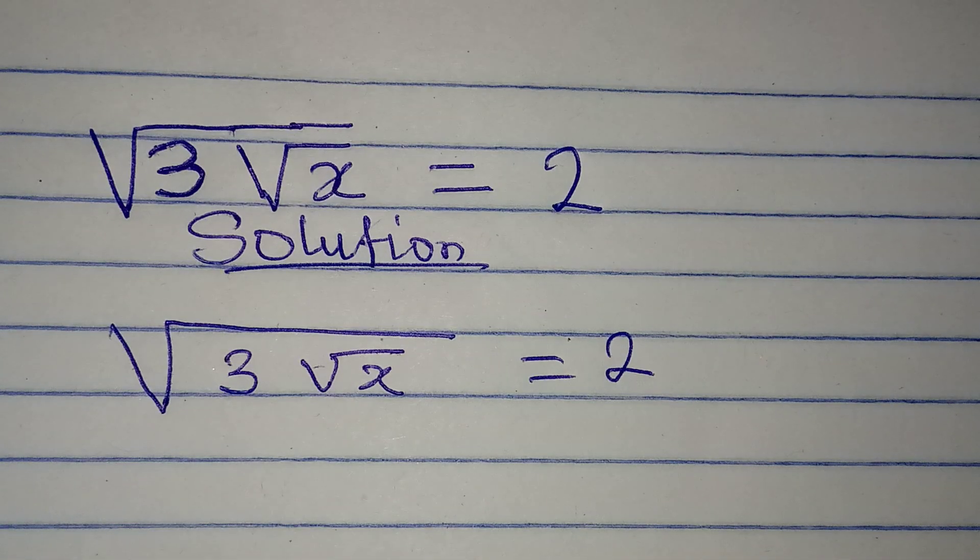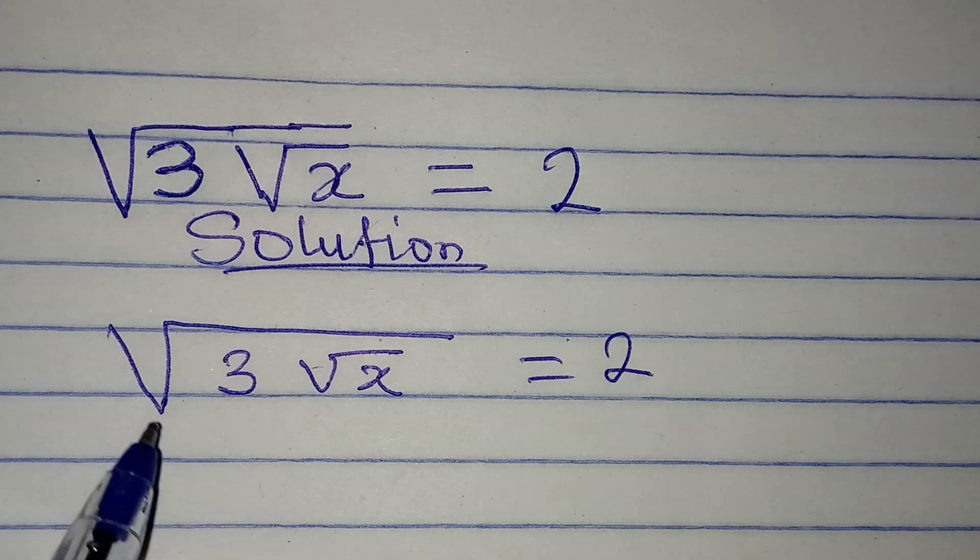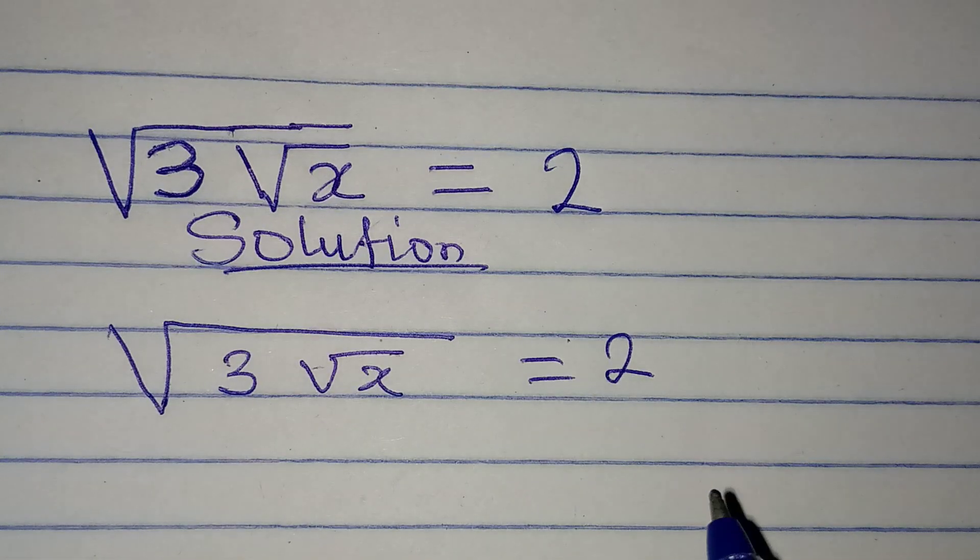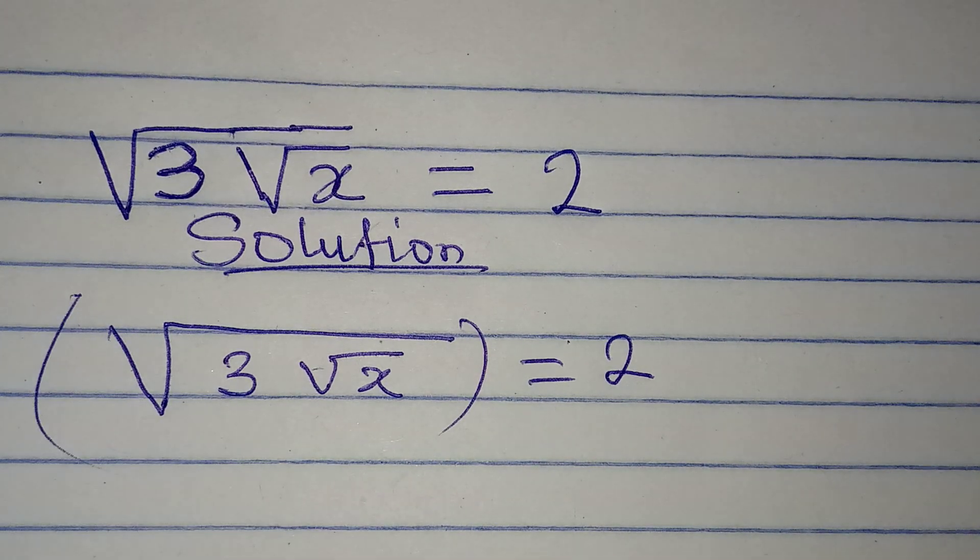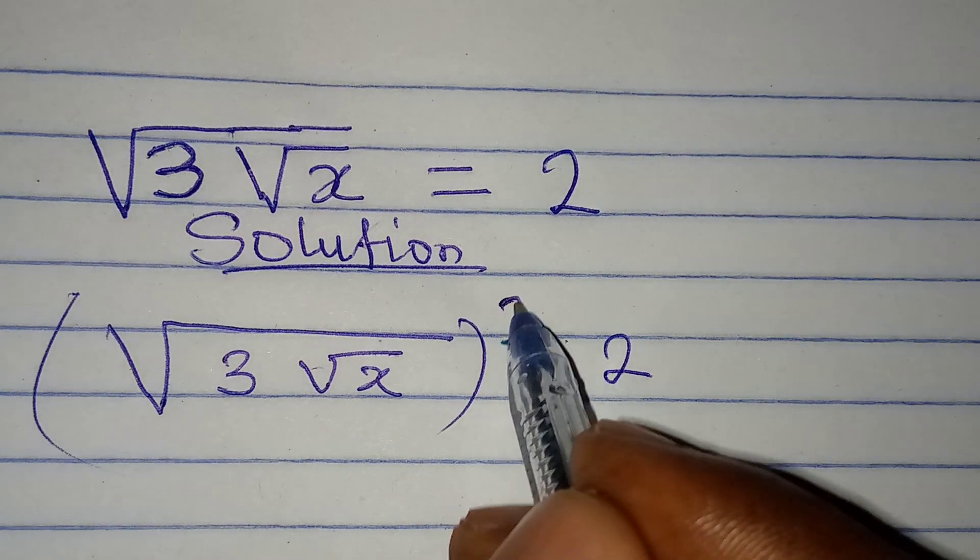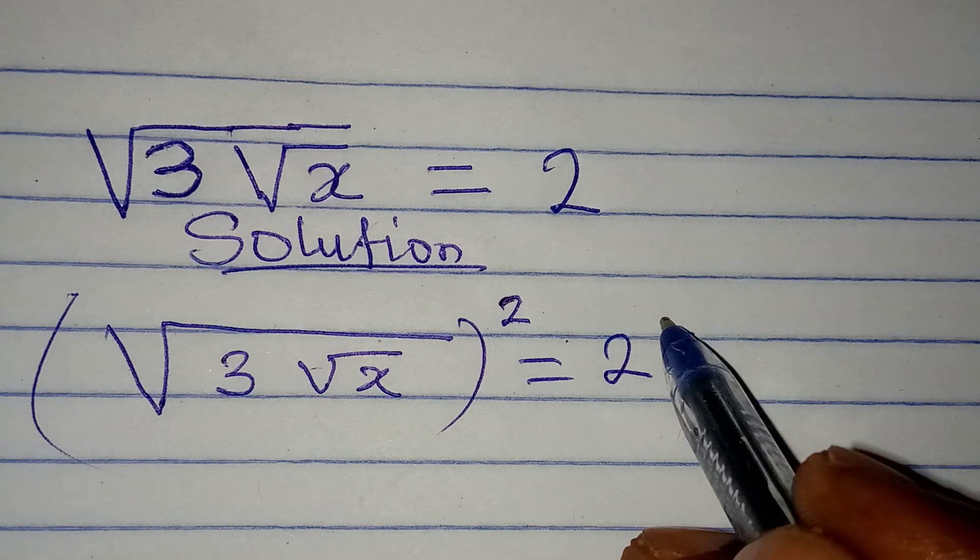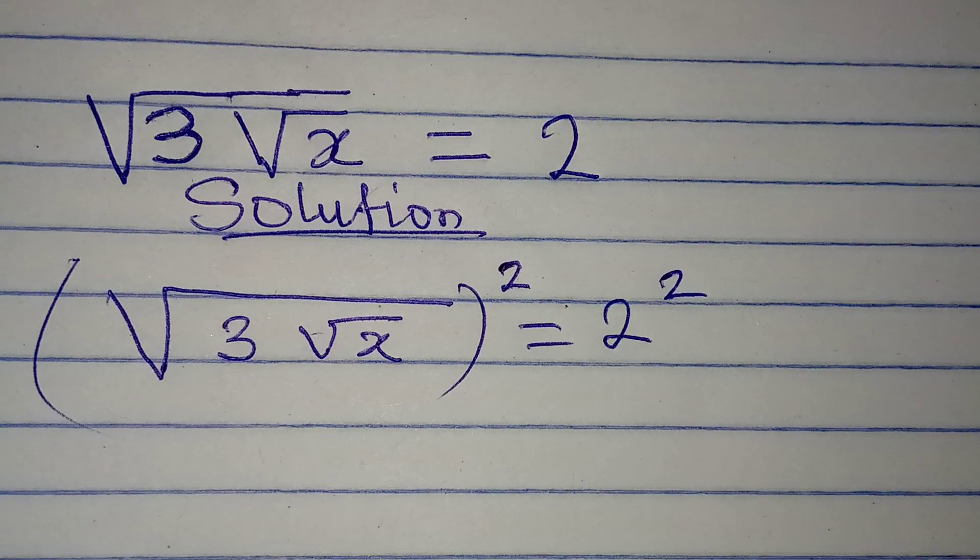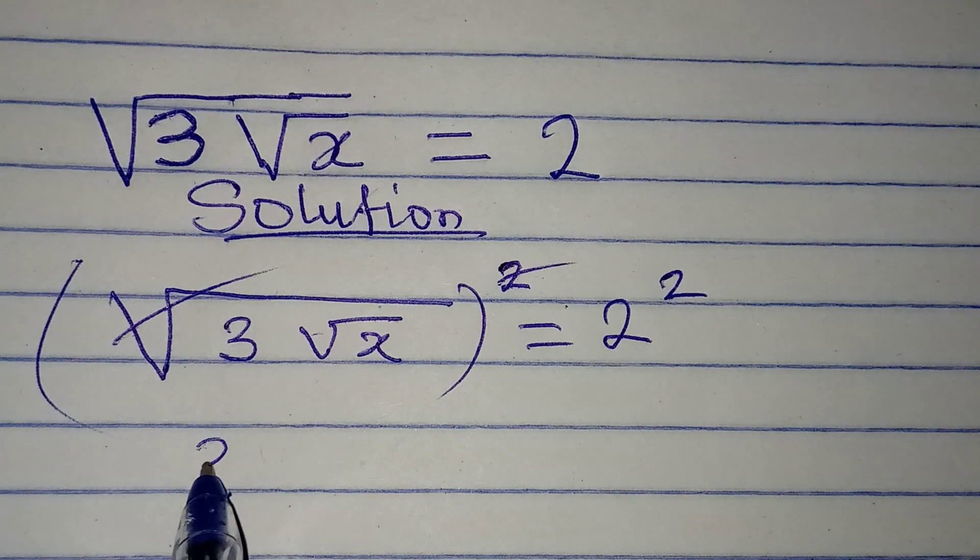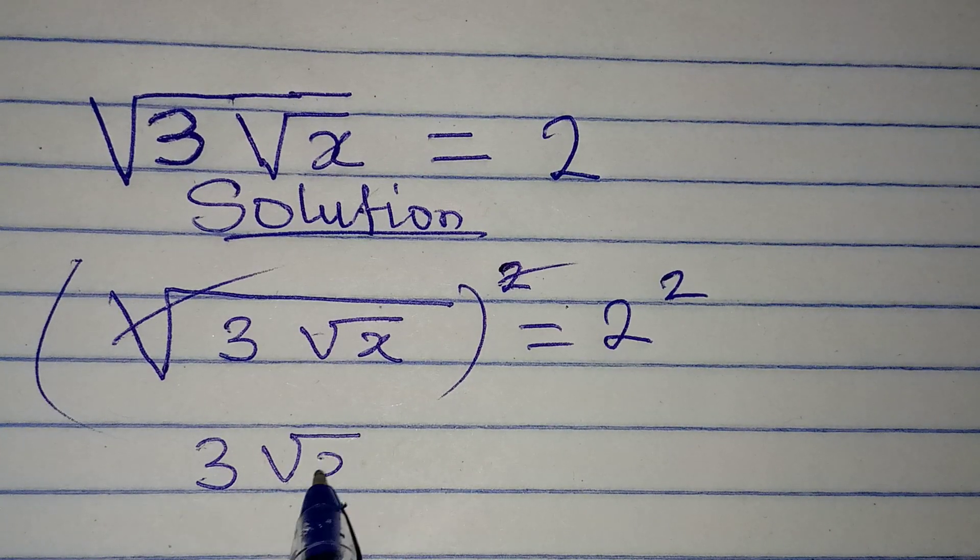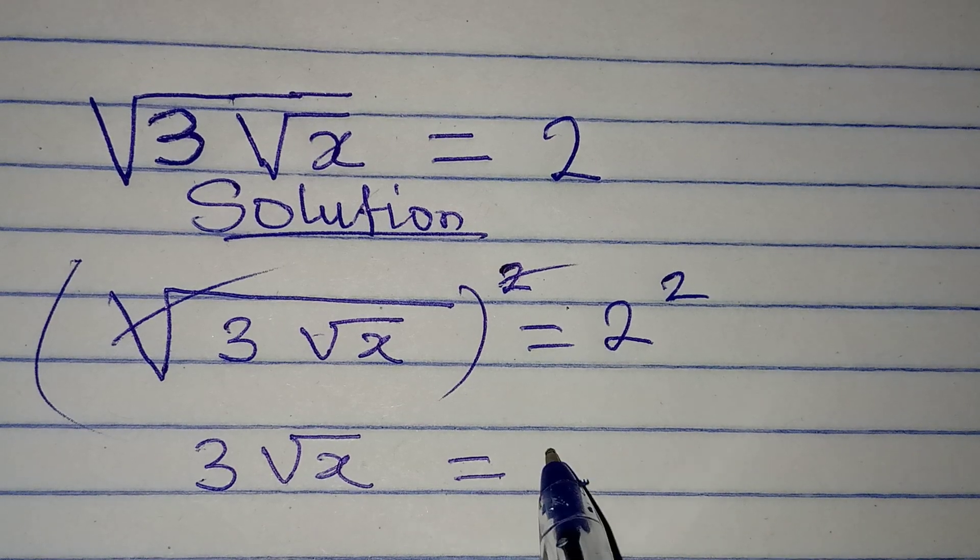Now the first thing we are going to do is to remove the outer square root. And we do that by squaring both sides, so we square this side too. And then, this and this can now cancel, so that's 3 square root of x is equal to 4.